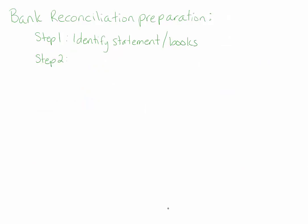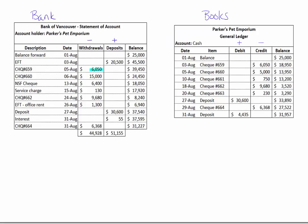Step two is to check off all matching transactions — find transactions that are the same on the bank statement and the company's books. If the transaction has gone through the company's books and it's also on the bank statement, then we can assume that transaction is correct. For example, check 659 on the bank statement matches check 659 on the general ledger with matching amounts, so we check those off. We do that for all matching transactions. The remaining items are called reconciling items, and we'll deal with those on the actual bank reconciliation.